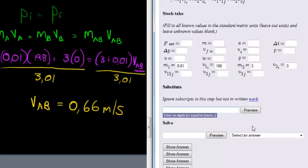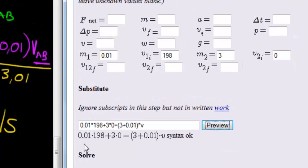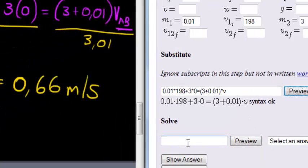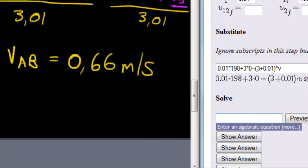And that's where we got this equation from, so that's the equation we're doing in our substitution step. And just remember we aren't writing subscripts, so we're going to leave that AB out. So we have 0.01 times 198 plus 3 times 0 is equal to 3.01 or you could have put it like this, 3 plus 0.01 just in brackets times velocity lowercase letter. That looks correct. And then what did we get? Well, we got our answer was that velocity is equal to 0.66 meters per second. Preview, perfect.